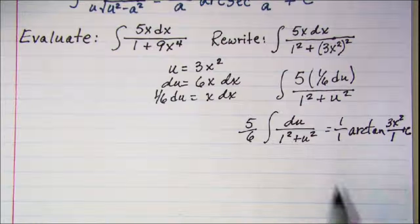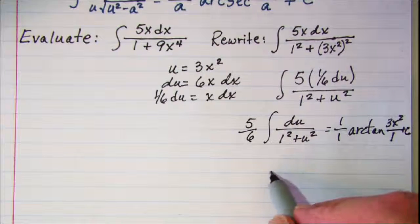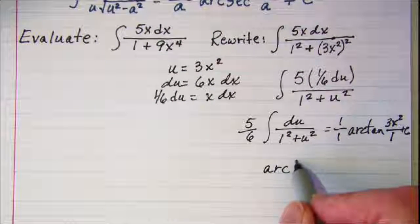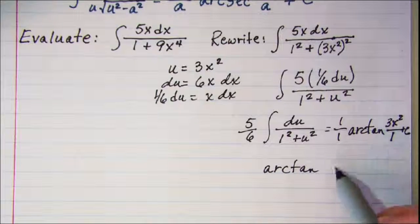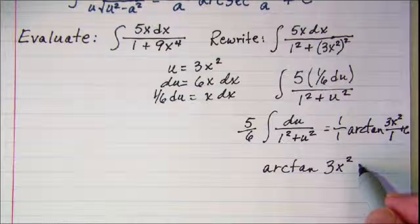So let's simplify this just a little bit. This is going to be 5 sixths arctan 3x squared plus a constant.